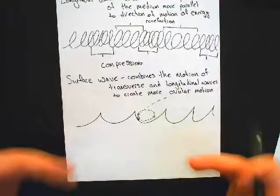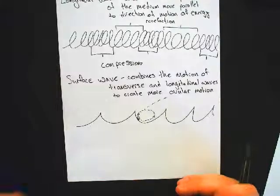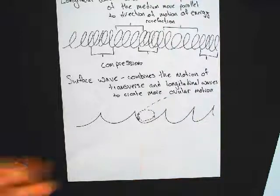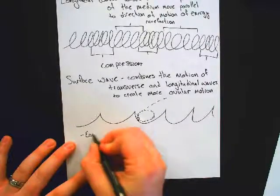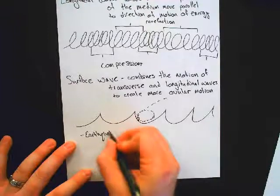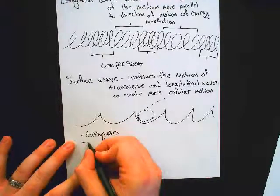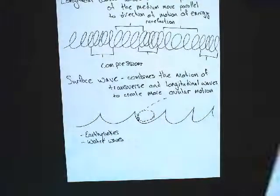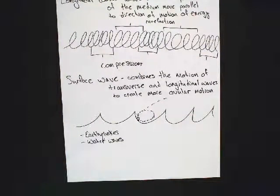This is seen whenever we have a wave being created between two mediums. Like where water meets air, we can see this kind of wave. Where the ground meets air, we see this kind of wave for earthquakes. Where Jell-O meets air, we can see this kind of wave. Good examples would be earthquakes, other good examples would be water waves. Questions on any of these notes?